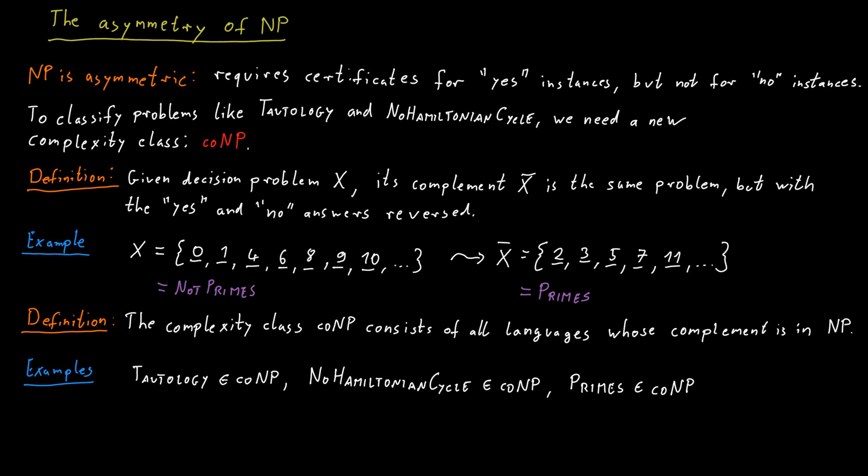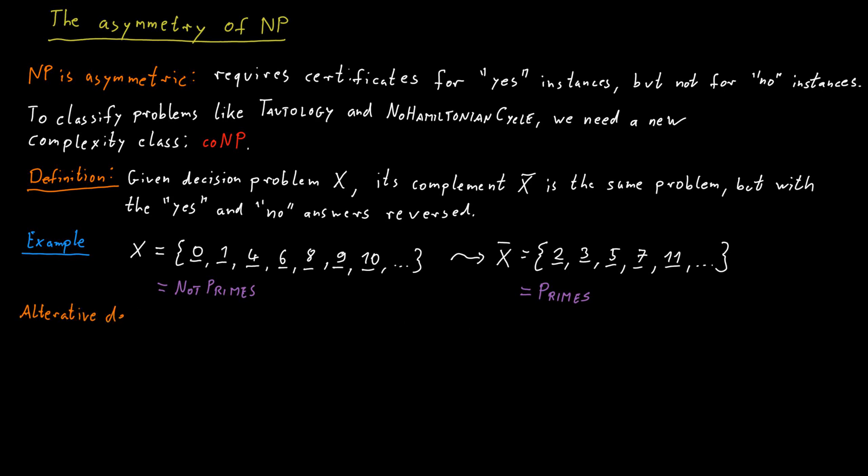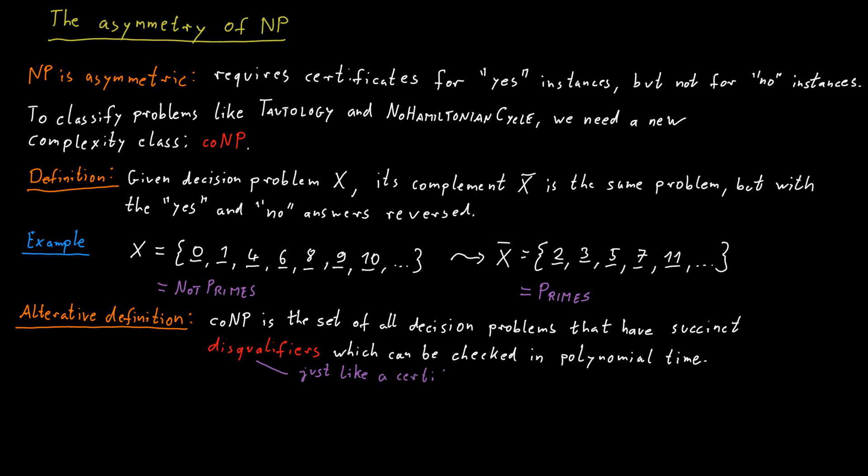We could also define co-NP more directly. In that case, co-NP would consist of all the decision problems for which we have succinct disqualifiers which can be checked in polynomial time. A disqualifier is just the same as a certificate. The only difference is that it applies to no instances of the problem instead of yes instances. Intuitively, it should be possible to easily convince somebody that a word is not in the language. If this is possible, then that specific decision problem is in co-NP.